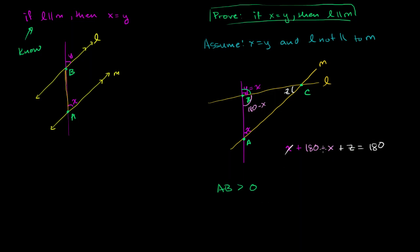Now, these X's cancel out. We can subtract 180 degrees from both sides. And we are left with Z is equal to zero.